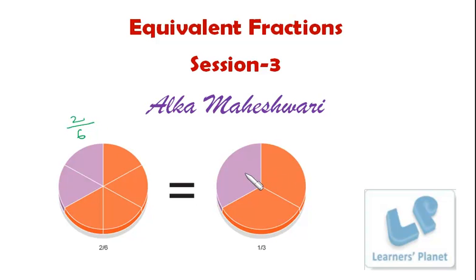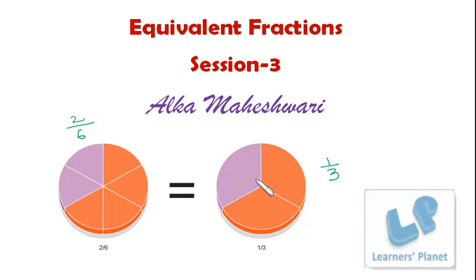Similarly here — one, two, three — three equal parts, and one part is pink. So this is one third of the whole. Pink is one third of the whole.